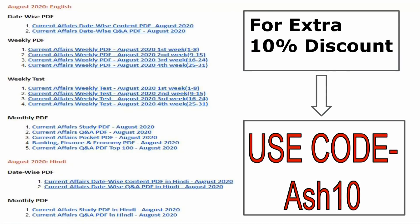Before proceeding, I want to discuss the Affairs Cloud subscription. You can buy our subscription with two methods: first, visit our website affairscloud.com/current-affairs, or second, visit this video's description box where there is a subscription link. By clicking on that link, you can directly reach the subscription area.